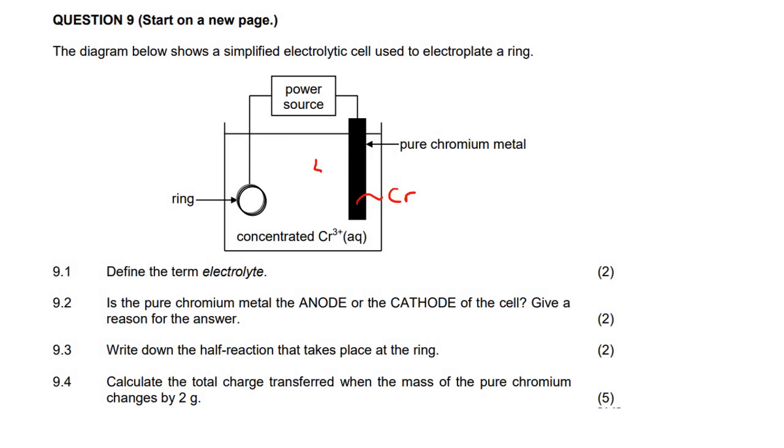That's just a little summary of what we're going to do here. You're taking the solid chromium, converting it into ions. Those ions then move over to the ring, and then they get reduced to form pure chromium again.